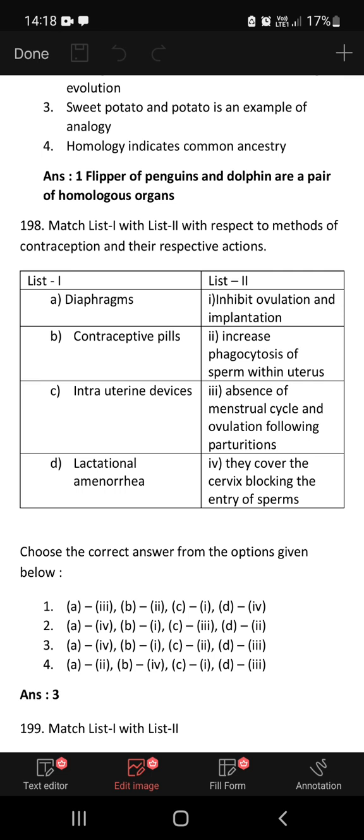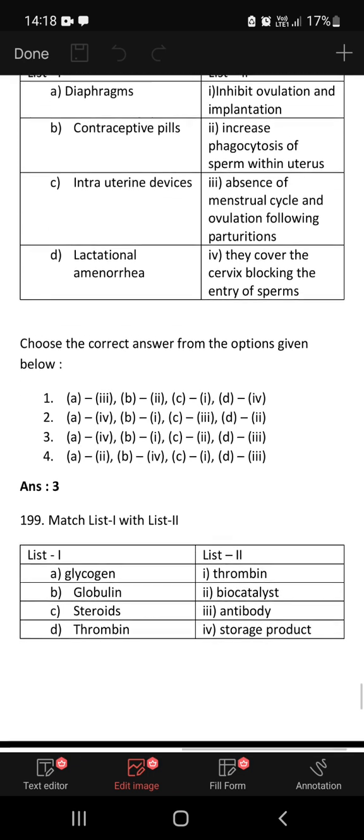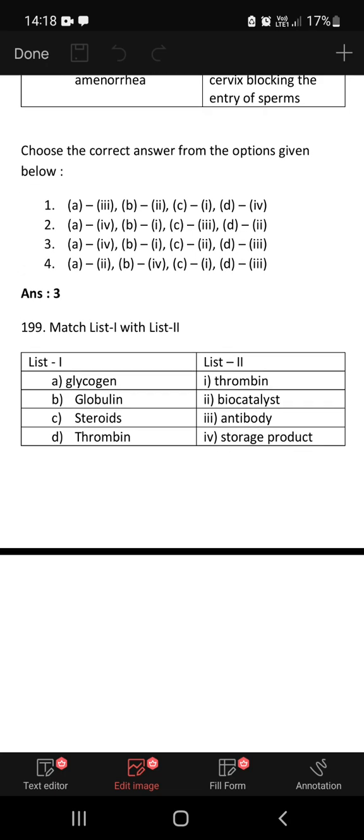Match column one with column two. Diaphragms cover the cervix blocking the entry of sperms. Contraceptive pills, absence of menstrual cycle and ovulation following parturition. The third option, A4, B1, C2, D3 is a correct option.